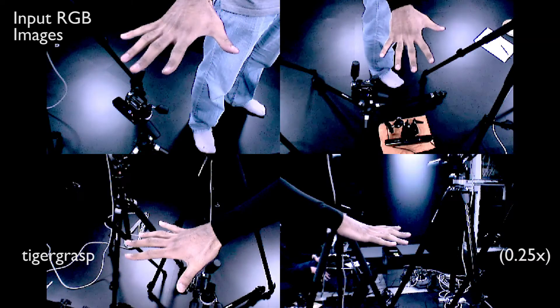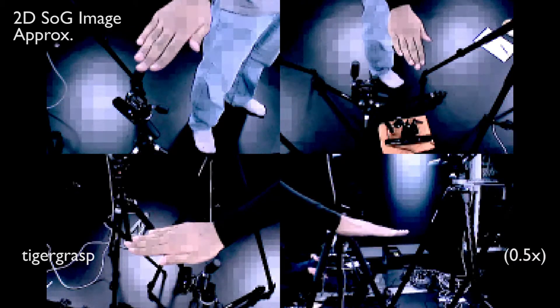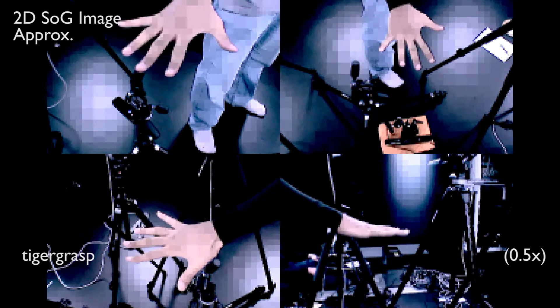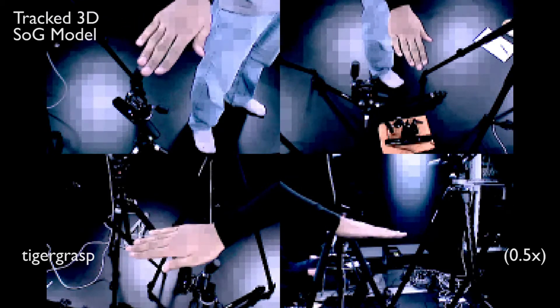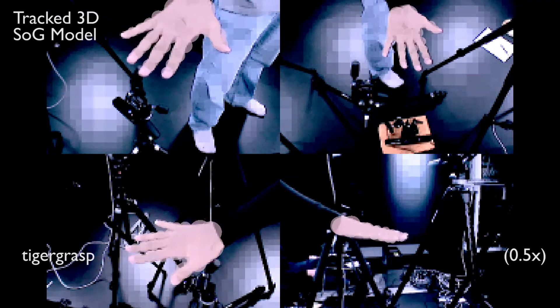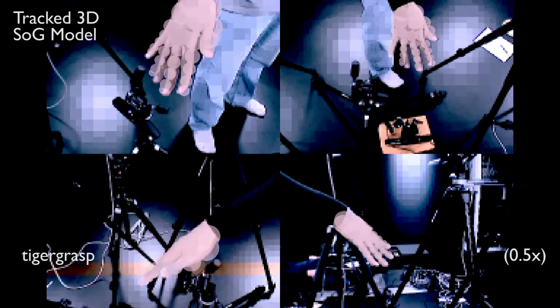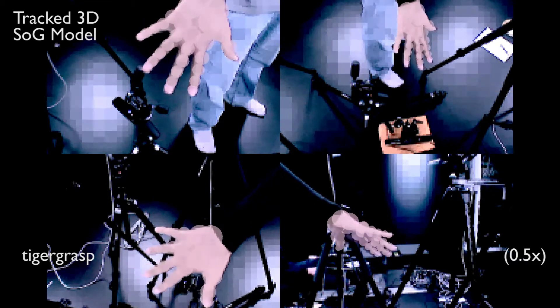The input images are approximated to 2D Gaussians using a quadratory representation. Generative pose estimation finds the pose that maximizes the similarity between the 3D sums of Gaussians hand model and the 2D images.